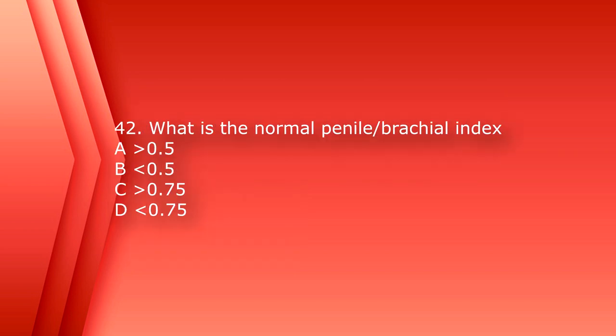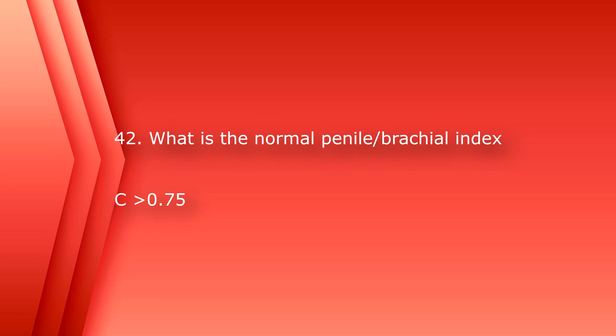Number 42: what is the normal penile brachial index? A. Greater than 0.5, B. Less than 0.5, C. Greater than 0.75, or D. Less than 0.75. The answer is C, greater than 0.75.